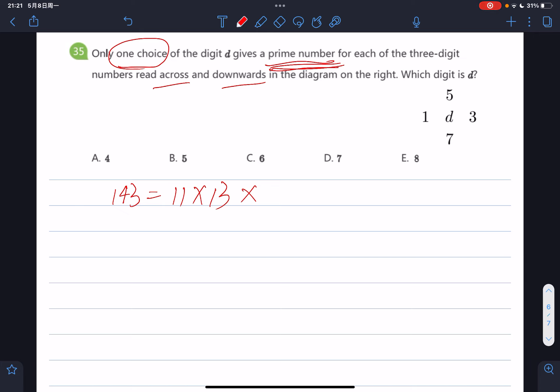And the second one, 153. 153 can also be expressed as 3 times 51. So it is also not a prime number.